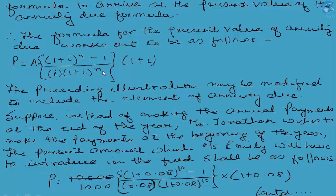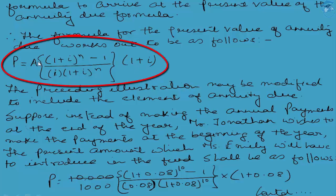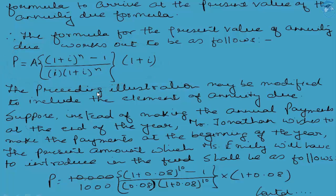For the formula of the present value of an annuity due, we need to include (1 + i), which represents the additional earning of interest for one full year because the annuity payment or receipt is taking place at the start of the year rather than at the end. There is nothing much manipulation in the formula — we are simply multiplying the existing present value of annuity formula by (1 + i). So the preceding illustration may be modified: instead of making the annual payment at the end of the year, Mr. Jonathan wishes to make the payment at the beginning of the year.